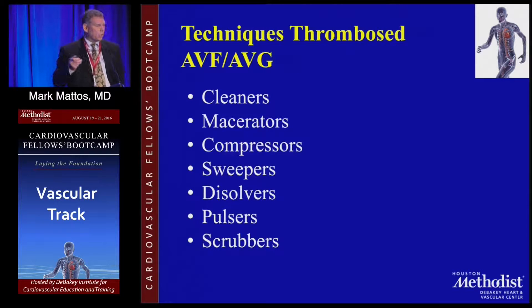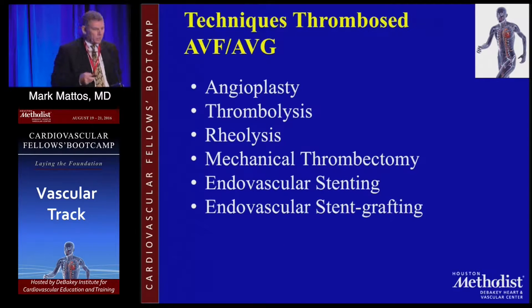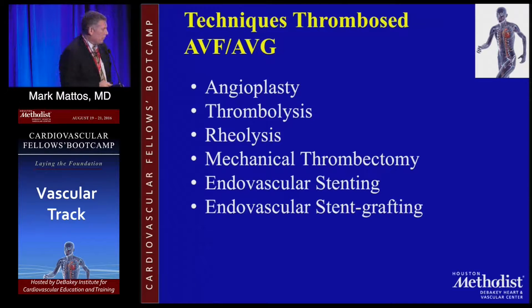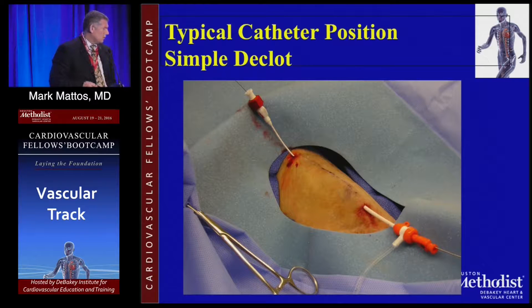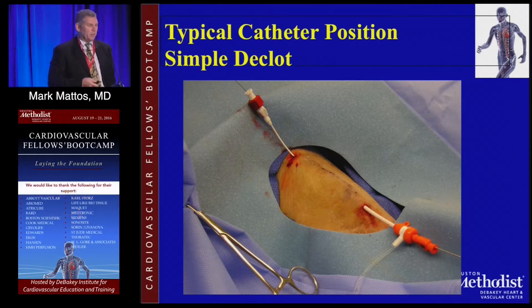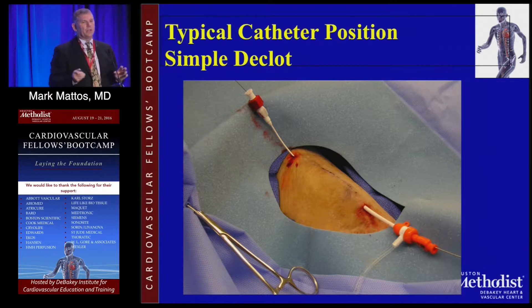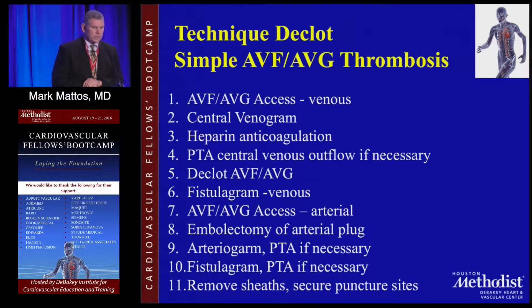For thrombosis of an AV graft, there are many techniques: cleaners, macerators, compressors, sweepers, dissolvers, pulsers, and scrubbers. Your attendings will have different approaches — AngioJet, open surgical thrombectomy, or percutaneous methods. Total access thrombosis is more severe, may require thrombolysis and AngioJet for the central venous system, and has decreased patency compared to simple graft or fistula thrombosis. We do mostly percutaneous; we hardly do open unless necessary in the hospital. Everyone will have a different style — all your faculty will do it differently.